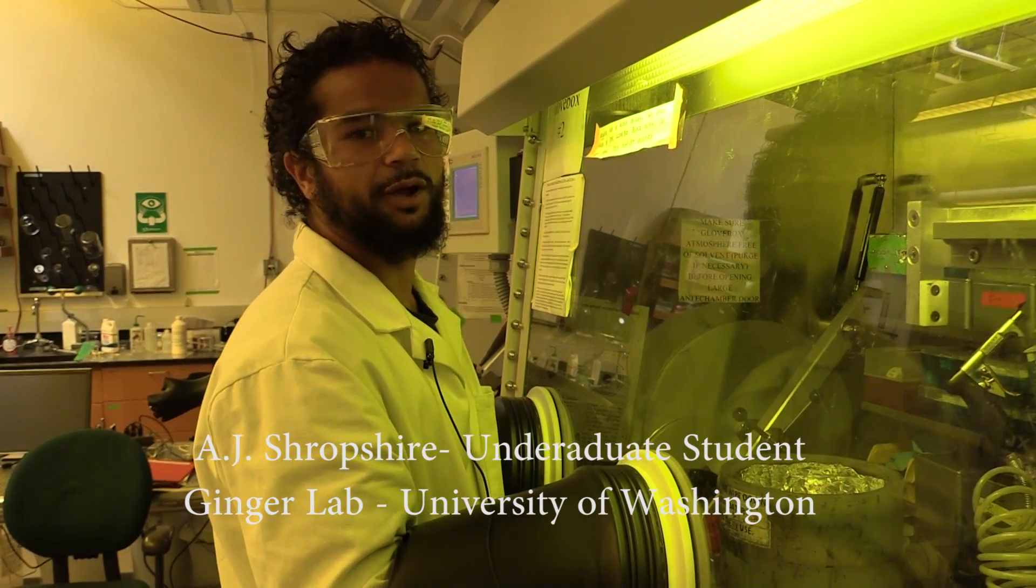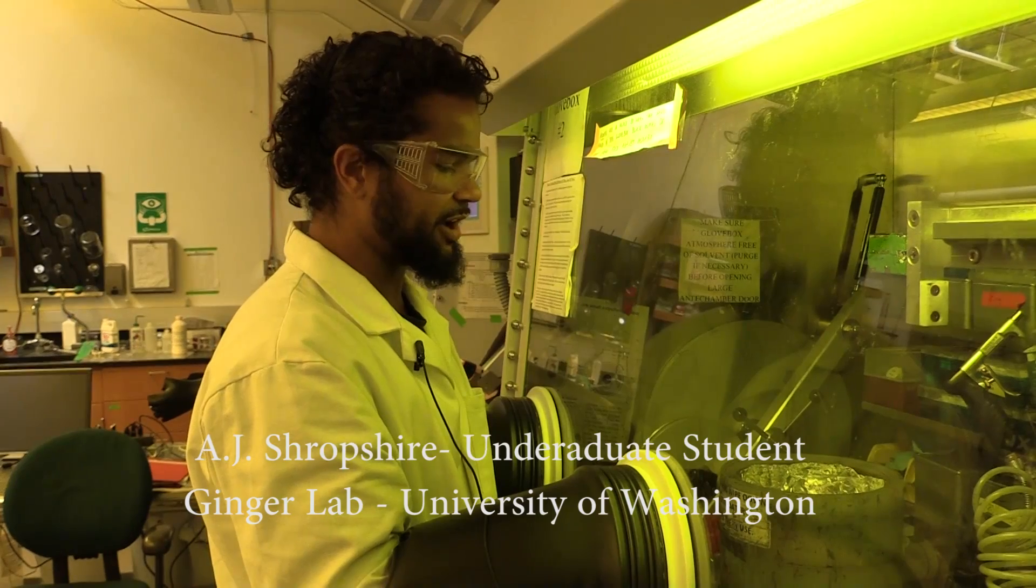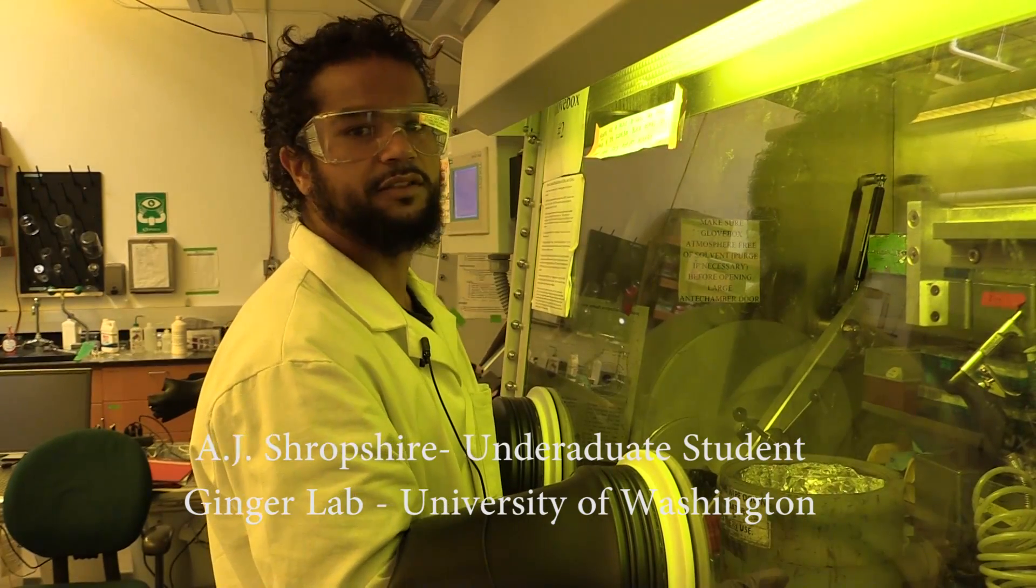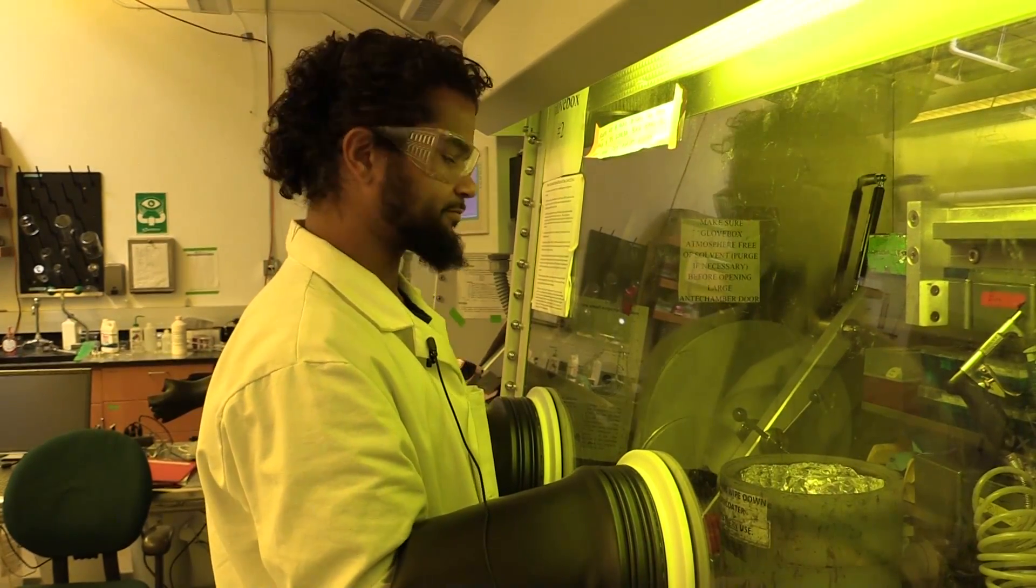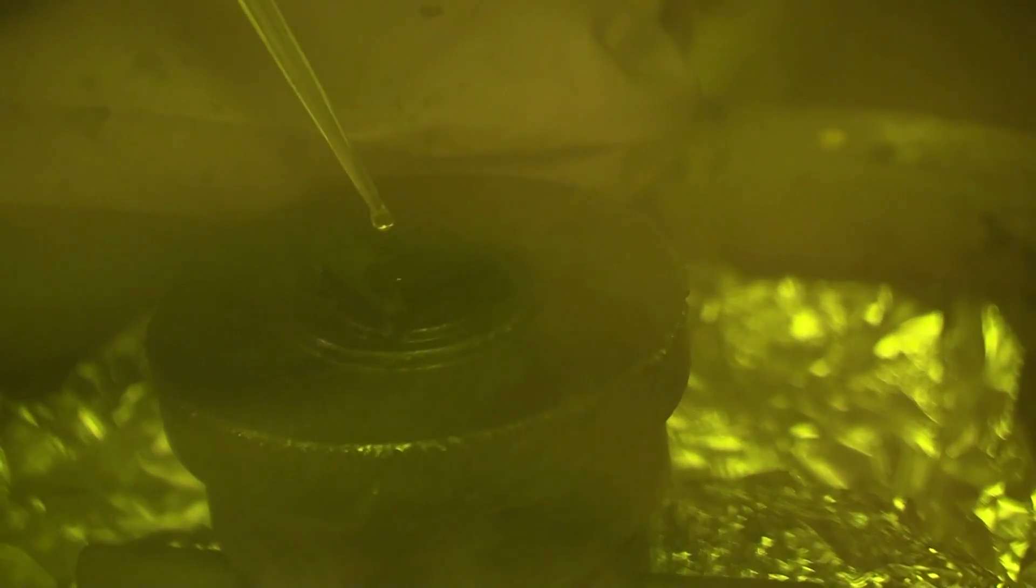Hi, I'm AJ Shropshire and I'm going to be demonstrating how to spin coat the Spiro-OMeTAD layer. Now we spin coat a solution of Spiro-OMeTAD on top of the perovskite layer at 4,000 RPM for one minute to form the Spiro-OMeTAD layer.